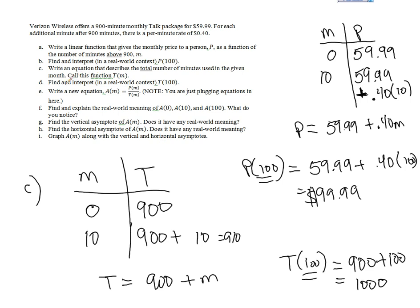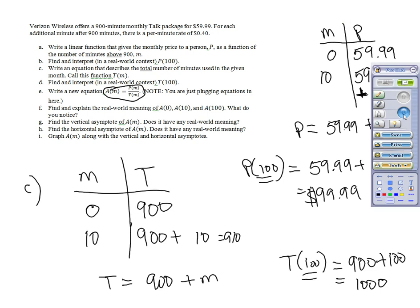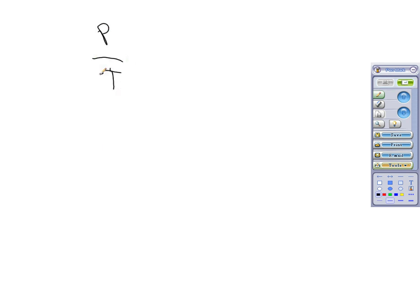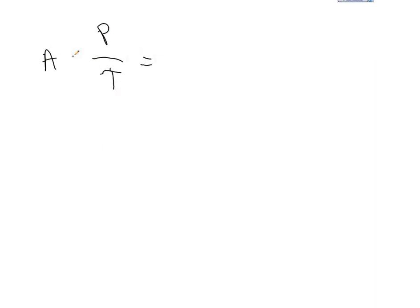Now we want to look at the relationship of these functions. So write a new equation, call it A, which is going to be the total price of your monthly bill divided by the number of total minutes you use. So all we really have to do here is take this function and divide it by this function. So P divided by T, so this is what we're calling A. Your price is 59.99 plus the 40 cents per minute, and your total minutes is 900 plus M.